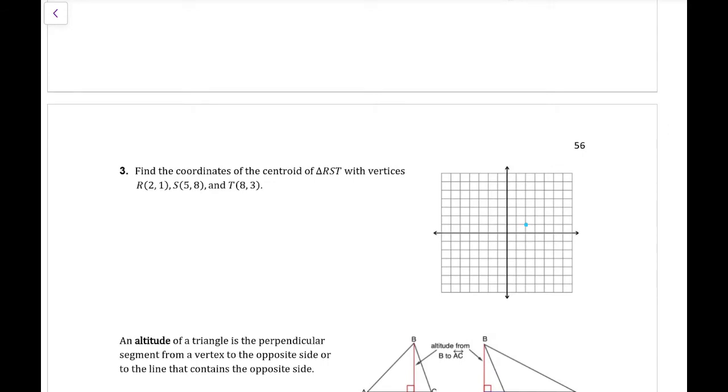Example three. We are finding the centroid of triangle RST. It's given us three vertices. We're going to go ahead and plot those points. We have a point at 2, 1. We have one at 5, 8, over 5, up 8. And we have one at 8, 3. So we're going over 8, up 3.